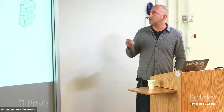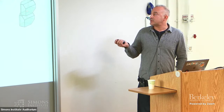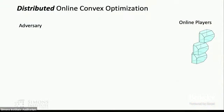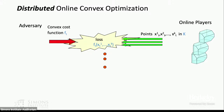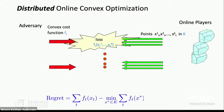The extension is the distributed OCO setting. We have many players, each potentially choosing a point from a different set. Every iteration, each of them gives a point, then the adversary gives a cost function which is convex in every one of the arguments — it's a joint cost applied to all points simultaneously. We would like the average regret to converge to zero with the number of iterations, with the hope that we can minimize the joint cost even though each player acts independently.